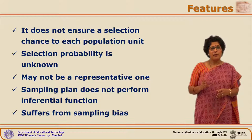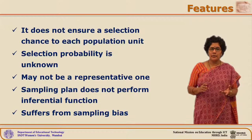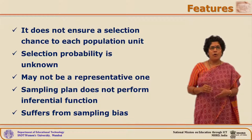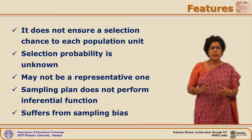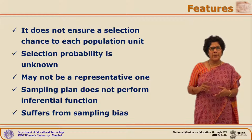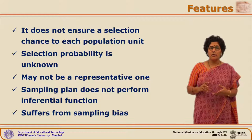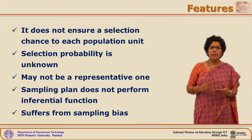That means some features could be lopsidedly present in the selected sample or at times could get avoided. This procedure definitely suffers from sampling bias, and because of this, inferential statistics cannot be used when these kinds of sampling methods are adopted.